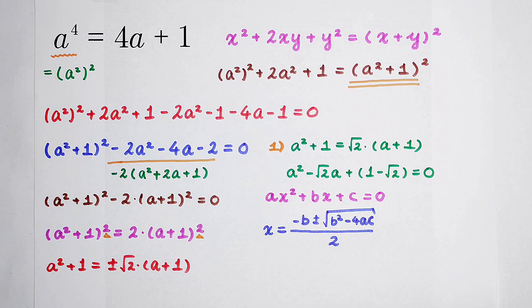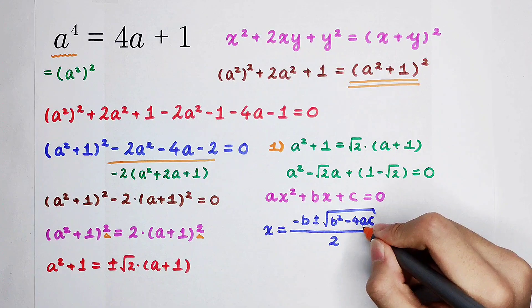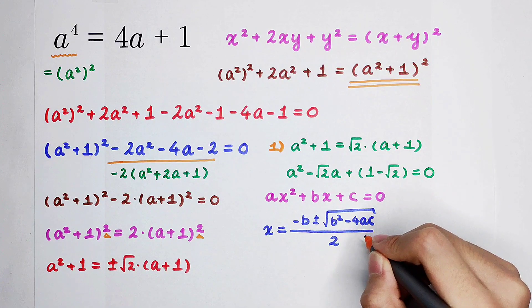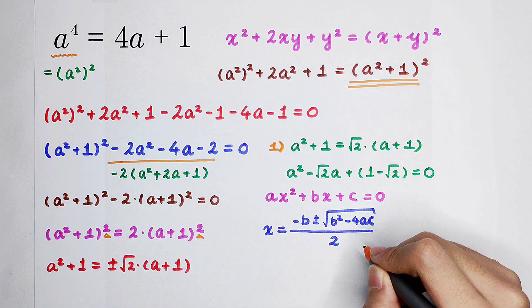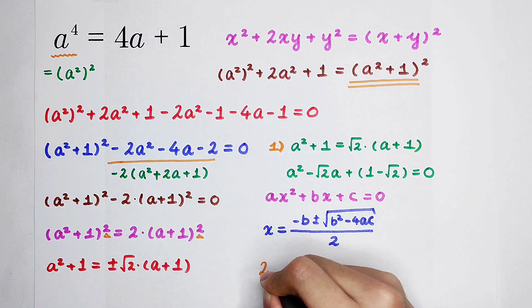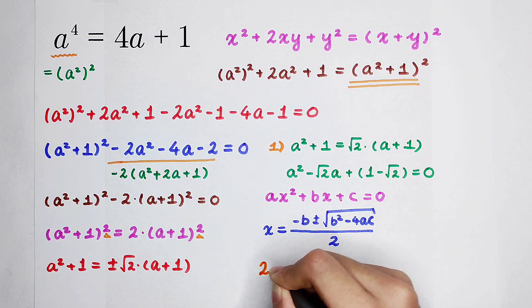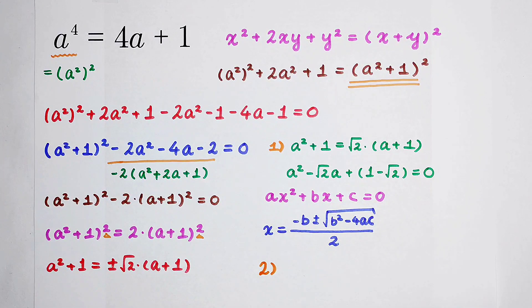If you check the delta, the b squared minus 4ac, you can find that the delta is greater than 0. It means there are two real roots from this case. You can solve it by yourself. And I'm not going to show the answers.